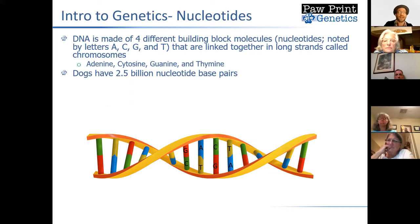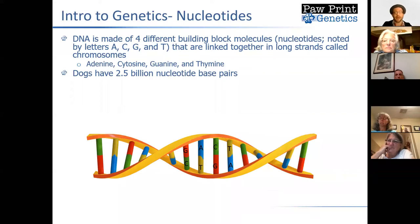These nucleotides line up in the molecule in a very defined pattern: G always binds to C, and A always binds to T. That property actually plays a really important role in maintaining genetics across bloodlines and into offspring.